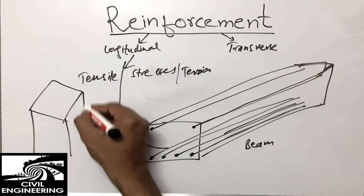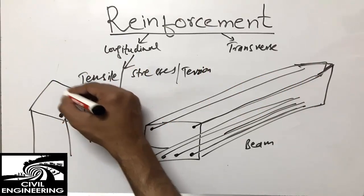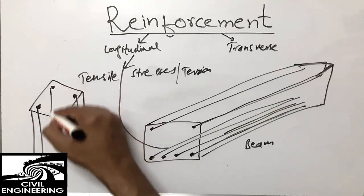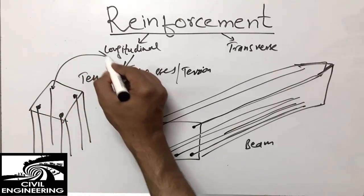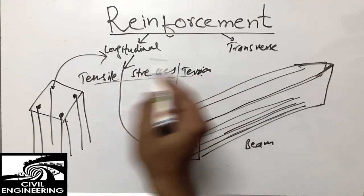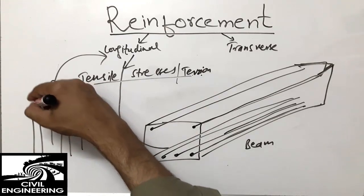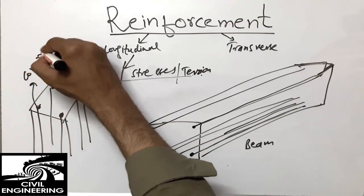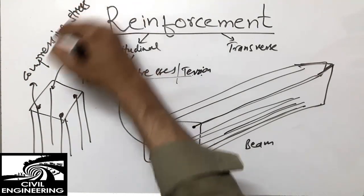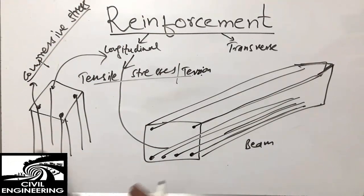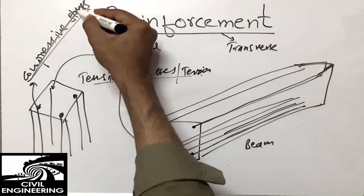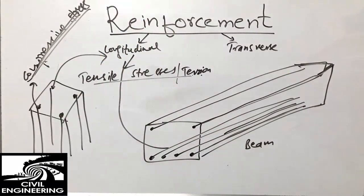In columns, longitudinal reinforcement is also used. These bars — one, two, three, four — run throughout the depth of the column and are also called longitudinal reinforcement. However, in columns they are not primarily used for tensile stresses; they are mainly used to resist compressive stresses. They can also resist tensile stresses when eccentricity is present, but compressive resistance is the primary role.